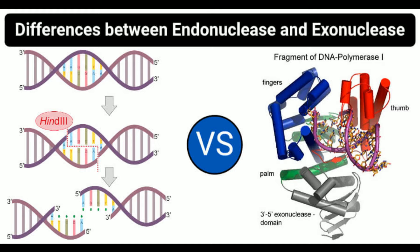Restriction endonucleases may have a lag period before their action, due to the time required for recognition of specific sites. Because endonuclease cleaves a DNA segment in the middle, it results in oligonucleotides. Some endonucleases also have a defensive function, preventing the entry of certain pathogens.